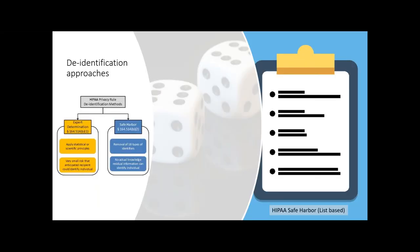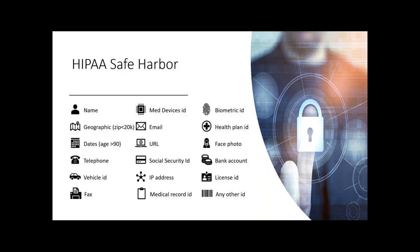The safe harbor approach is a list-based method. Safe harbor consists of a list of 18 classes or types of personal health information that regulators agree must be removed or anonymized from original sources. The regulator considers that if you remove all 18 classes — including names, geographic information, dates, telephone numbers, social security IDs, and so on — your dataset is sufficiently anonymized. The list always ends with 'any other identifier,' making it open to changes in technology or types of information.